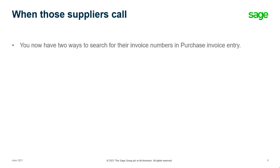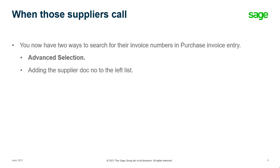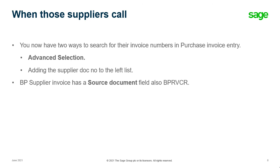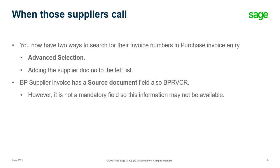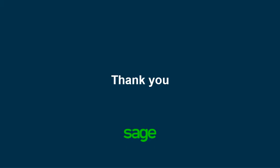When those suppliers call, you now have two ways to search for their invoice number in purchase invoice entry: advanced selection, or you can add the supplier doc number to the left list. The BP supplier invoice screen has a source document field, also called BPR VCR. However, it is not a mandatory field, so this information may not always be available. Thank you for joining us in today's session - until next time.